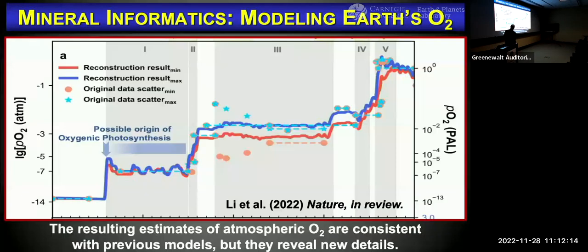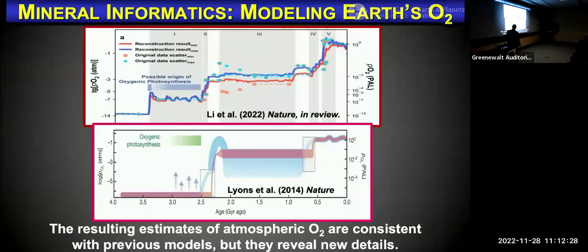Here is the model that Lee et al. have proposed — going back 1 billion, 2 billion, 3 billion, 4 billion years — and it's quite remarkable. You see the exact same trends as in the Lyons model, but with some new details. What Lee et al. are finding, based on manganese minerals, is that there's actually some degree of increased oxygenation between 3.5 and 3 billion years. You see the Great Oxidation Event, a period that looks quite stable, and then other bumps and wiggles — details not seen in other models.